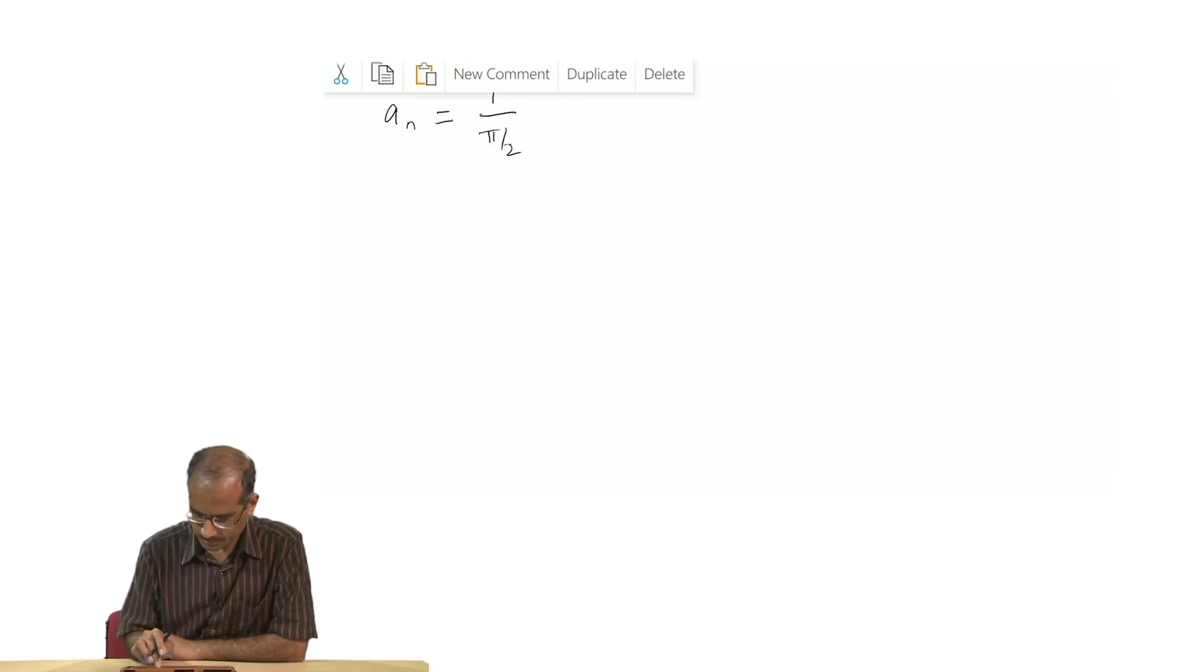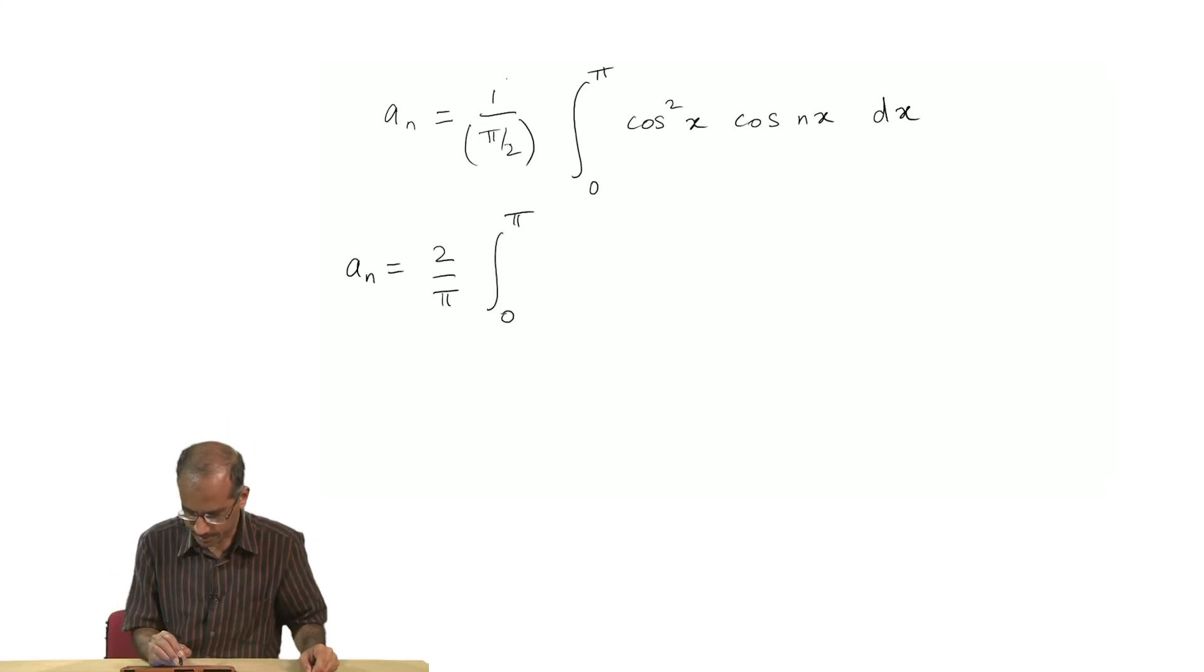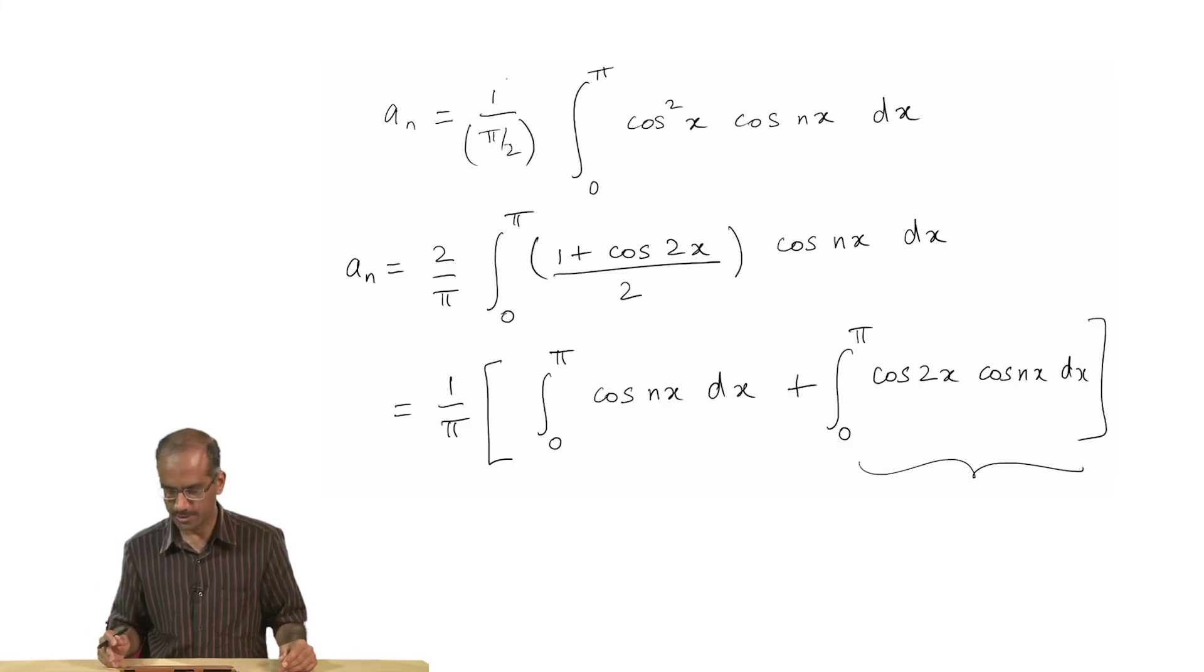Now let us calculate all other a coefficients, a_n's. Function is cos²x multiplied to cos nx dx. Again, we replace cos²x by (1 + cos 2x) divided by 2 and the whole thing multiplied to cos nx dx. Both these integrals are easy to do, especially the second integral. You should remember that this is like one of the formulas we saw on the very first day when we started looking at Fourier series.